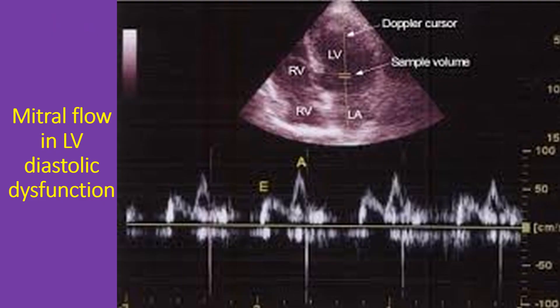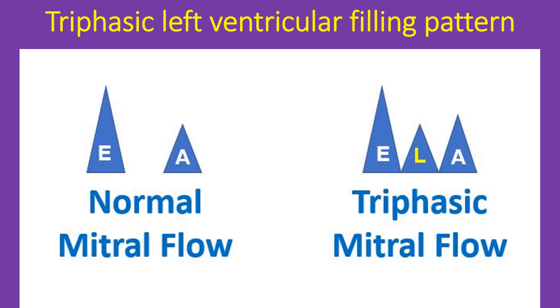The upper half of the image shows the apical 4-chamber view of the heart. The Doppler cursor and the sample volume are seen along the midline of the left ventricle. The lower half shows the Doppler flow pattern across the mitral valve, with the X axis representing time and Y axis representing velocity in centimetres per second. A triphasic left ventricular filling pattern with an additional mid-diastolic wave — called T wave by some and L wave by others — can occur in situations of left ventricular diastolic dysfunction, especially in hypertrophic cardiomyopathy.